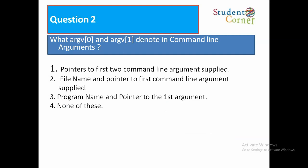Question 2: What do arg0 and arg1 denote in command line arguments? Option 1: Pointers to first two command line arguments. Option 2: File name and pointer to first command line argument. Option 3: Program name and pointer to the first argument. Option 4: None of these. The correct answer is option 2 — file name and pointer to first command line argument.